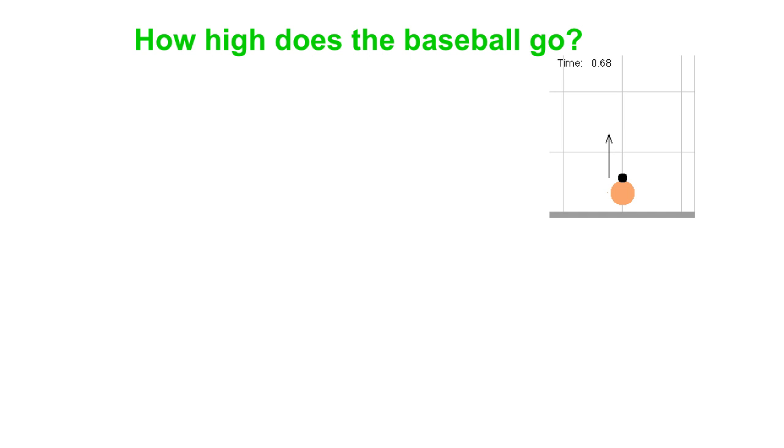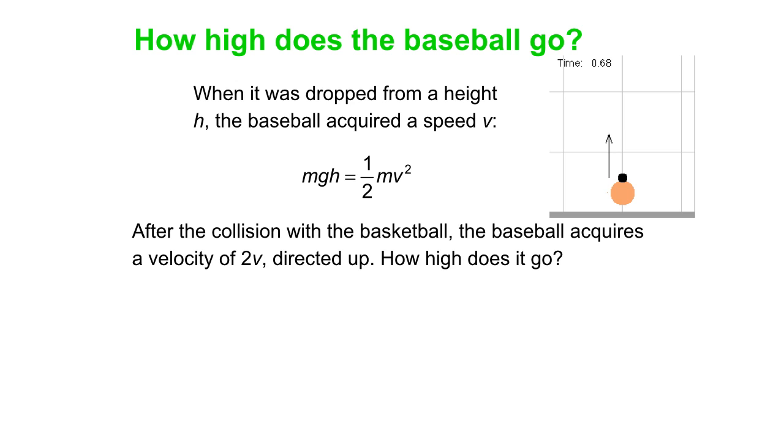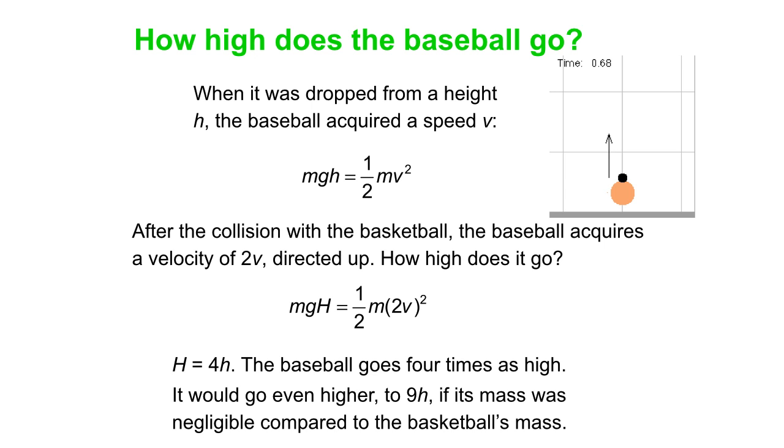How high does the baseball go? If you drop it from height h, it acquires a speed v. That's mgh is half mv squared. This is just the other way around. Now with the baseball with a velocity of 2v, because the 2v ends up being squared, the height is four times what it started out as. So the baseball goes four times as high.